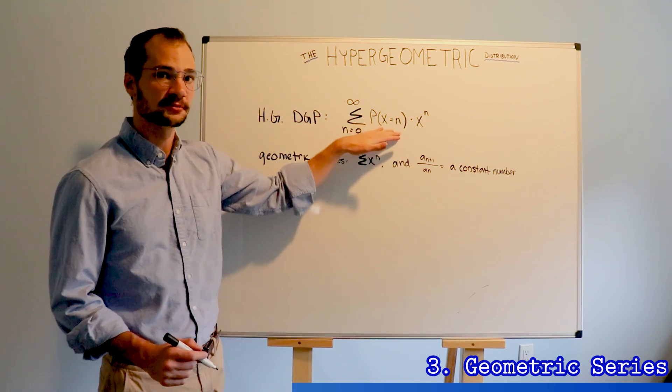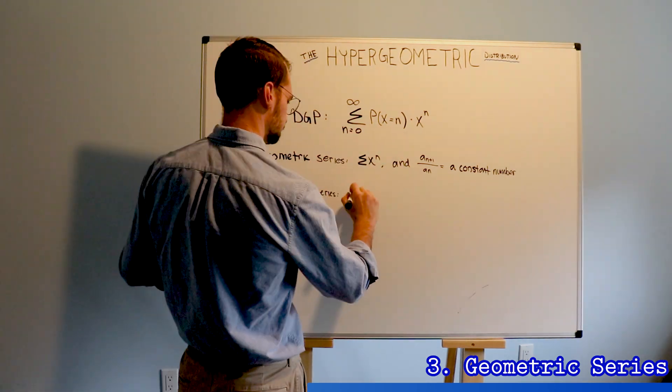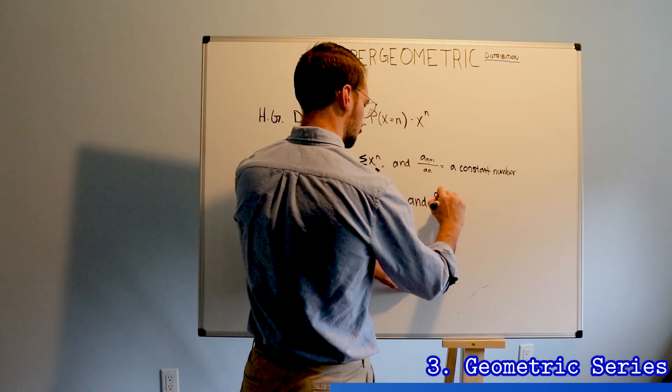Now, in the case of the hypergeometric, the ratio is not a constant number, but instead a constant function of n.